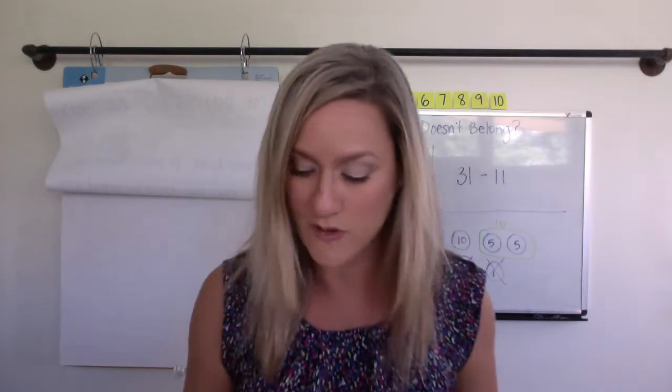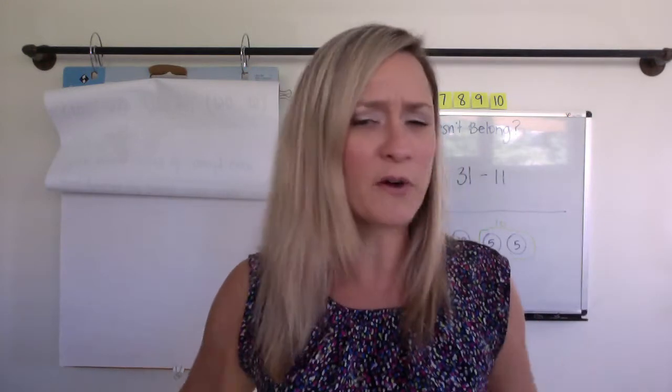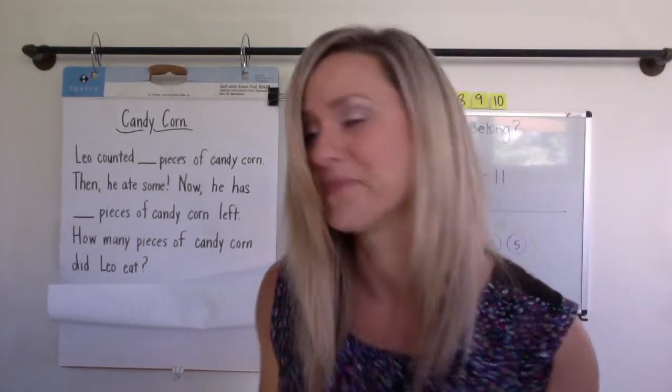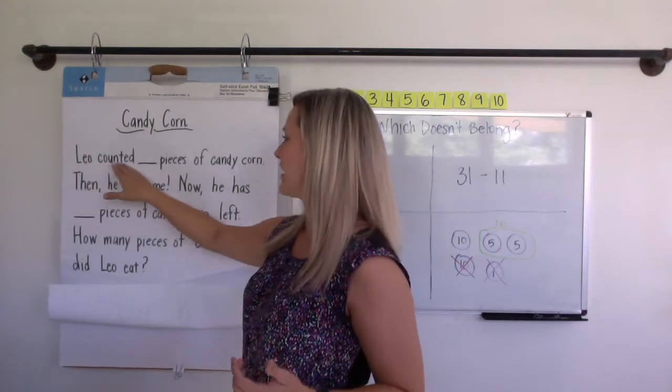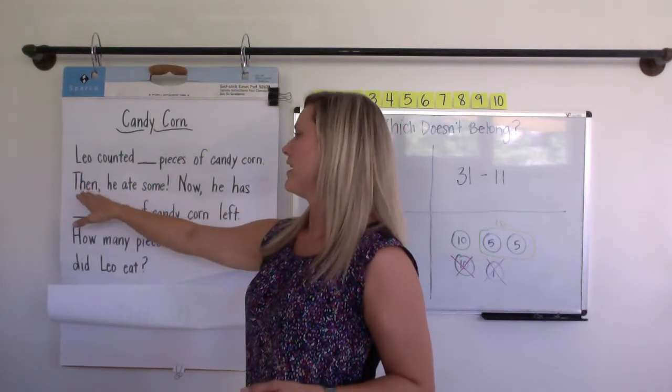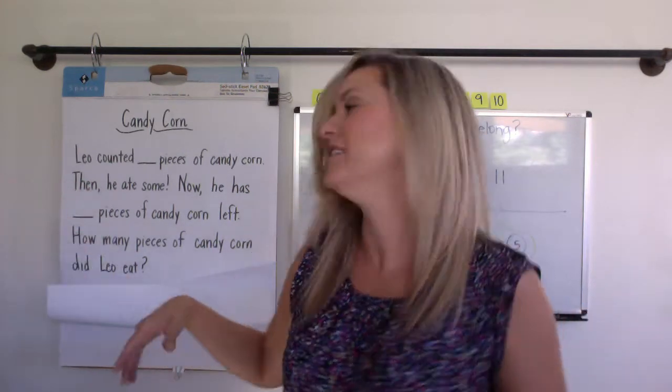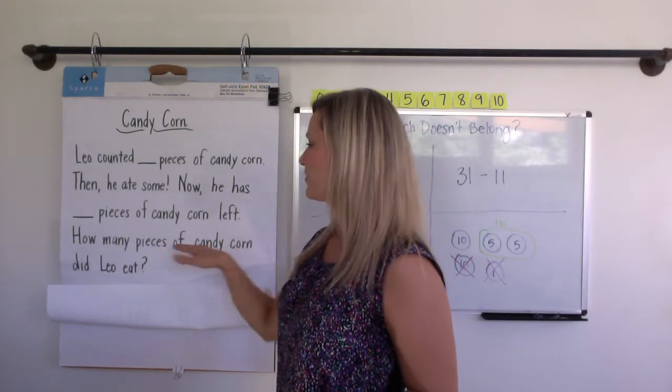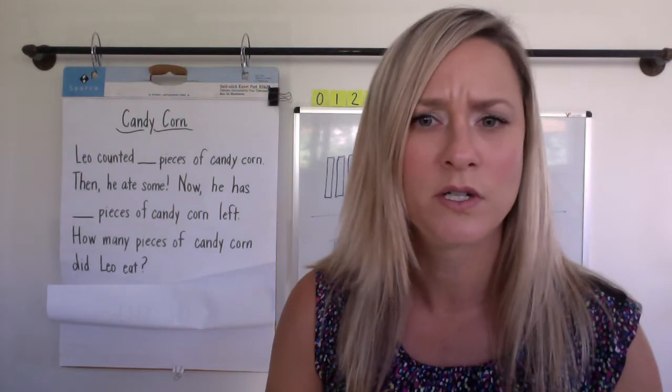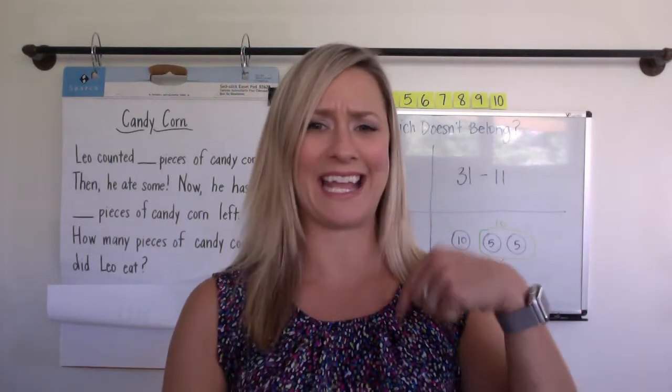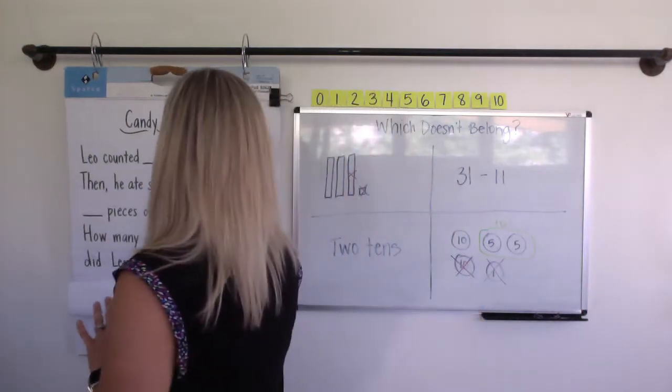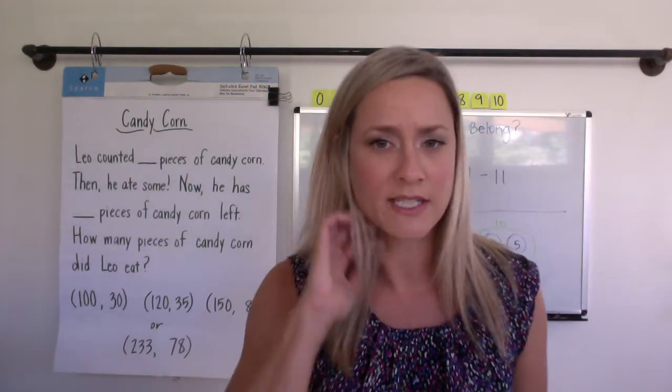Okay, we are going to move on to our story problem. Now, get ready because it's Halloween time and we are focused on that candy corn, you guys. Candy corn. The most delicious sugary treat of all time. Alright, here we go. Candy corn. Leo counted pieces of candy corn. Then he ate some. Now he has pieces of candy corn left. How many pieces of candy corn did Leo eat? We have to figure out how many pieces he ate. Let's see our just right number set so we can imagine with some numbers in there. I have to read it twice, sometimes even three times, and you should too.